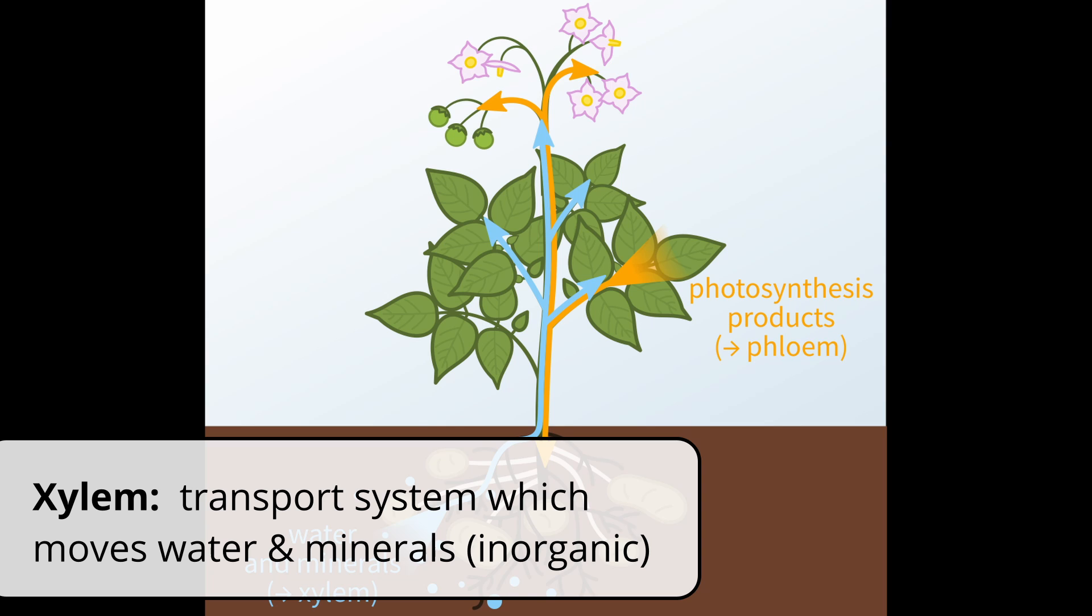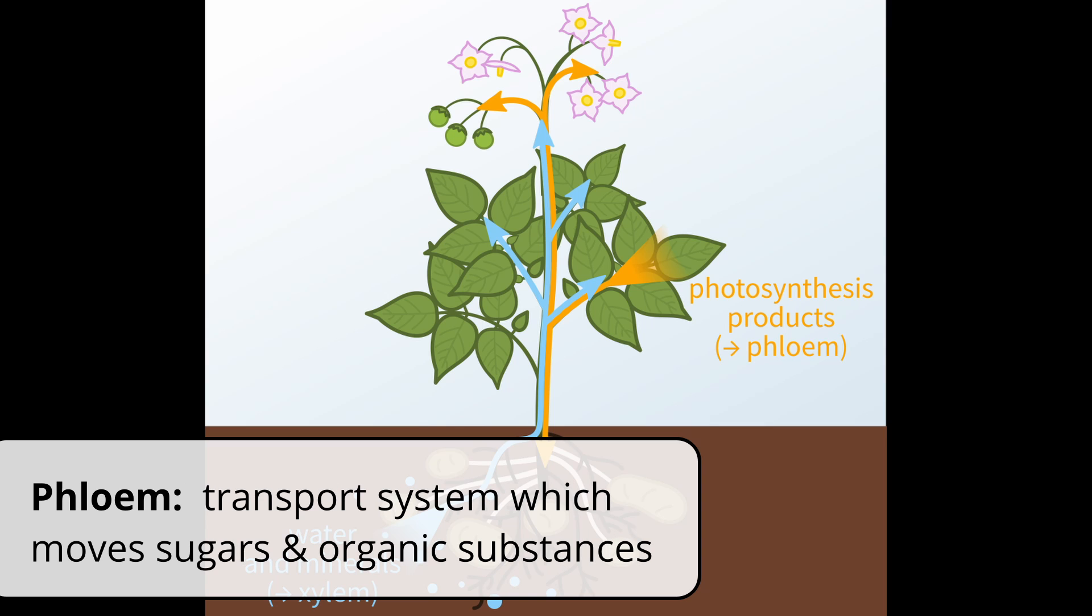Whereas xylem's job is to move water and any inorganic materials that are dissolved in the water, phloem focuses on moving sugars, or photosynthate, from where they're stored or created to where they're needed. It also moves other organic substances like amino acids, vitamins, or hormones.